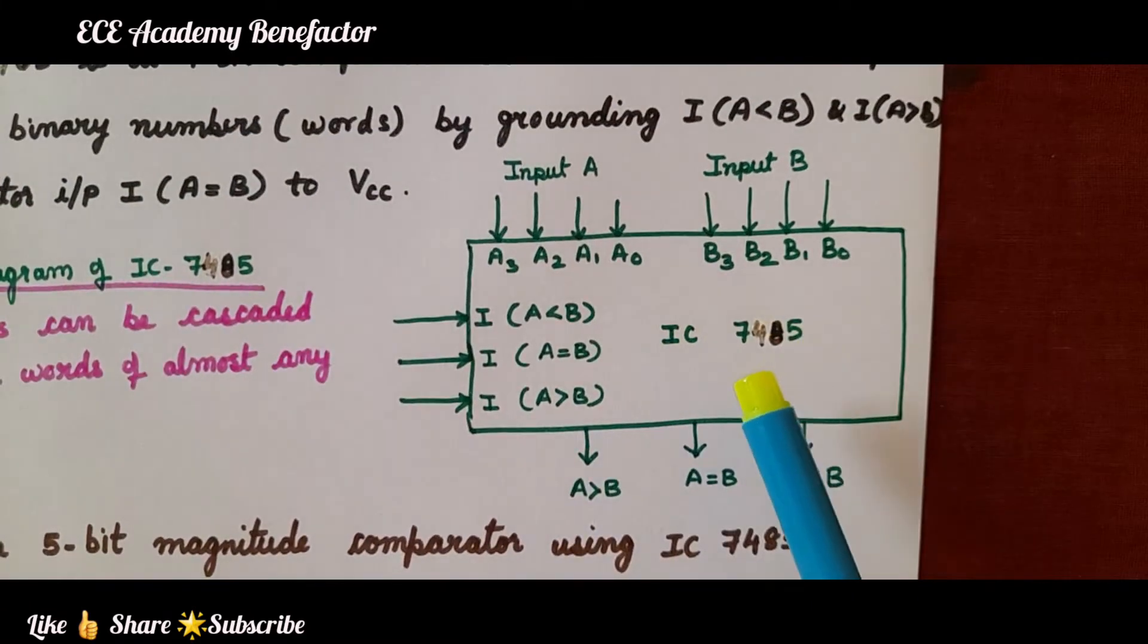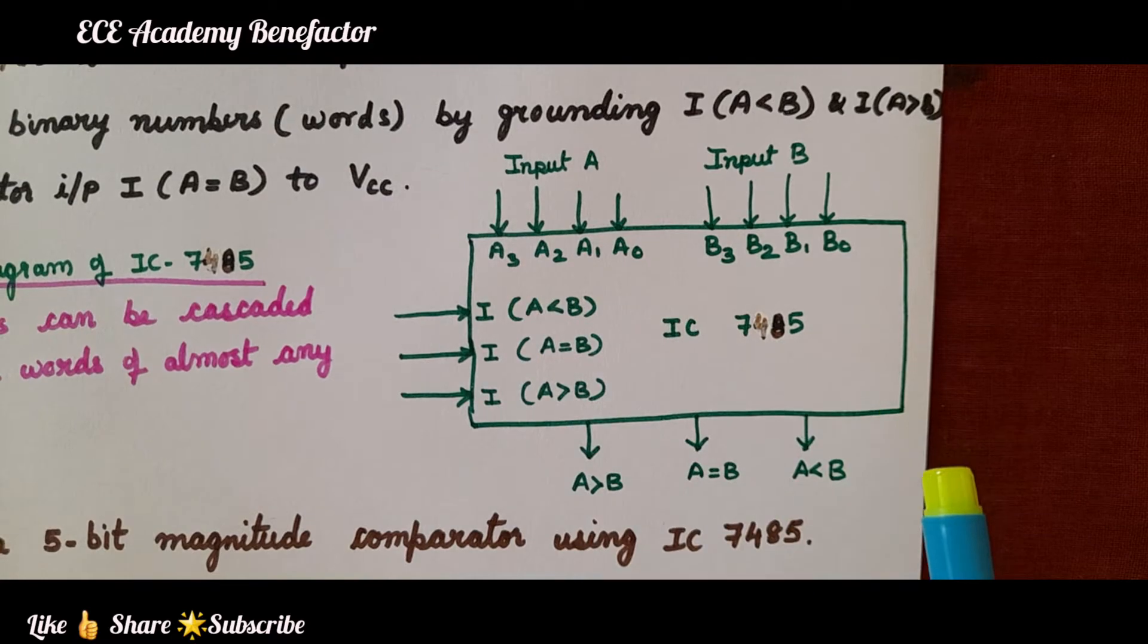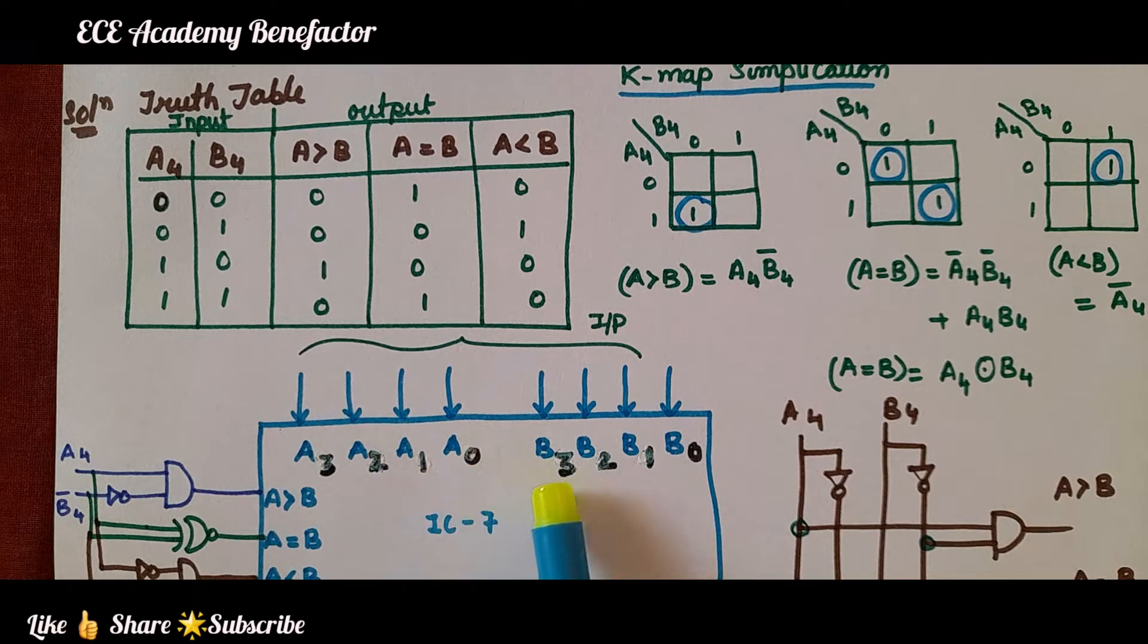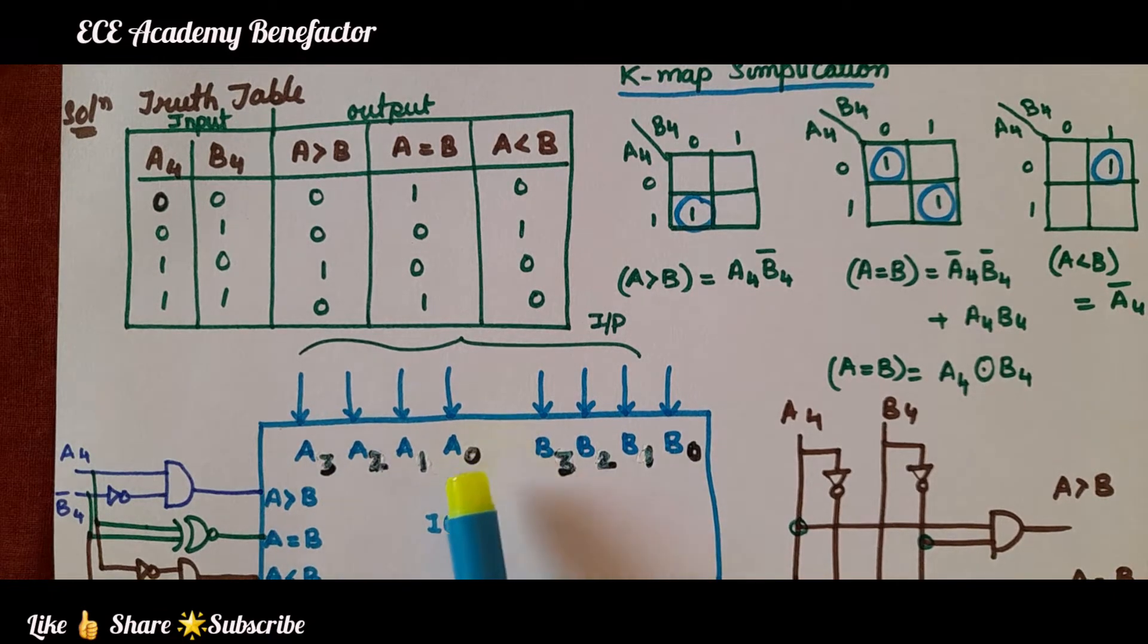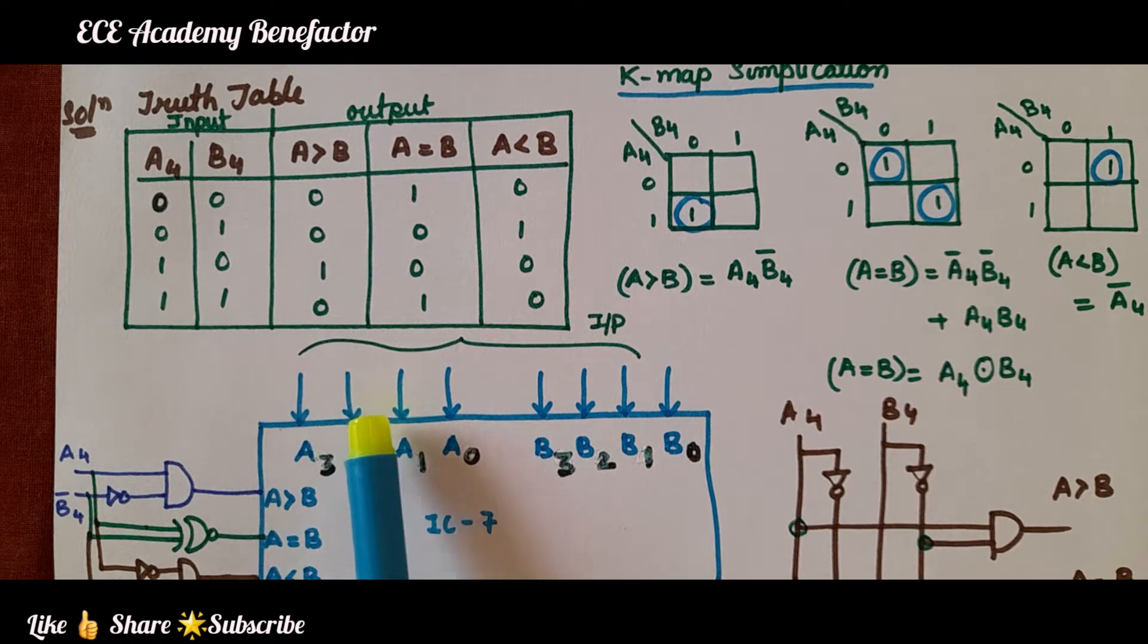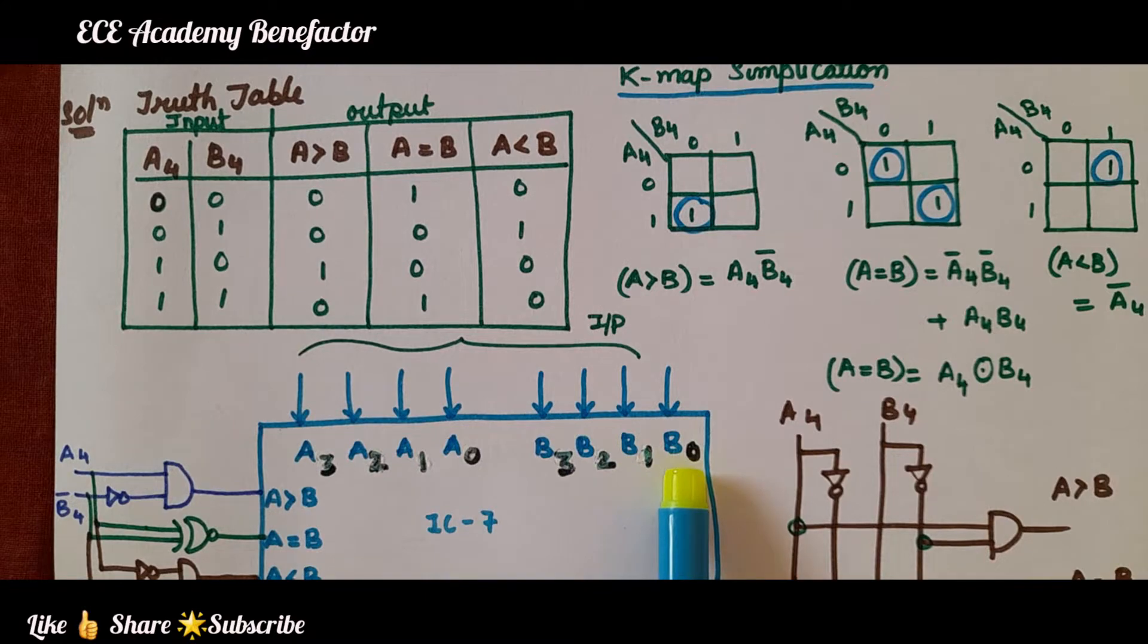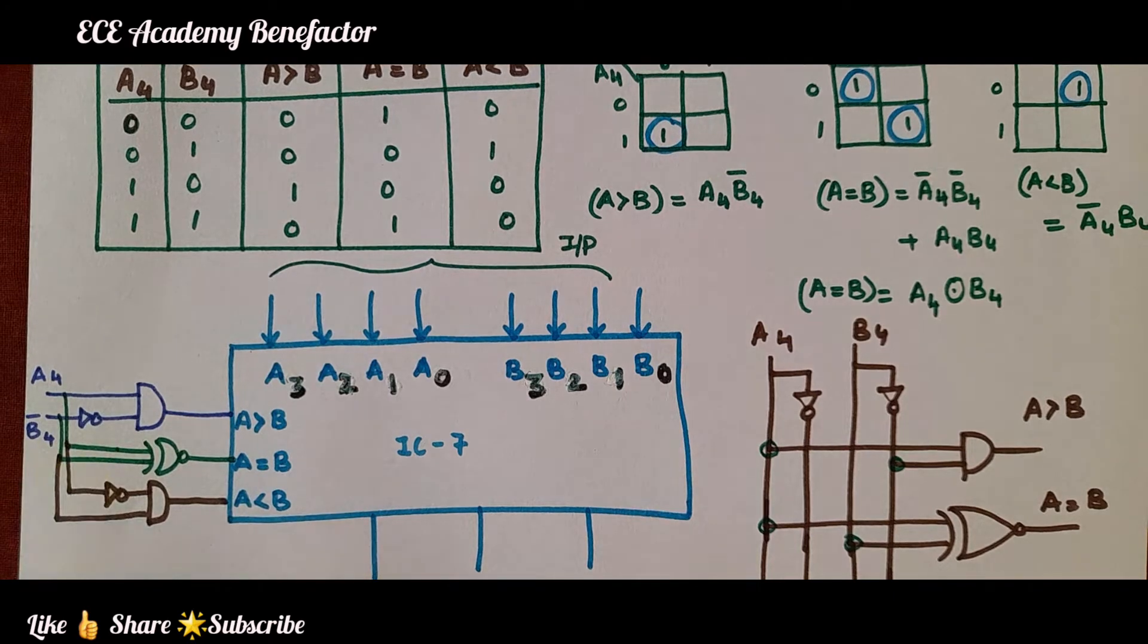Let us see the truth table. Here in this IC, input A and input B are 4-bits. That is, as you can see, the 4-bits are A3, A2, A1, A0, and the B number is B3, B2, B1, B0. There are 4-bits, but now we need to design a 5-bit comparator. 5-bit comparator means this A number must have 5-bits: A4, A3, A2, A1, A0. B number 5-bits means B4, B3, B2, B1, B0. How we are going to connect this A4 and B4 is the question.